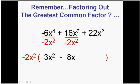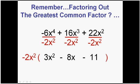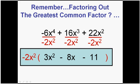Dividing the next term by negative 2x squared we get negative 8x. And then finally do the same thing to all three, dividing by negative 2x squared, we get minus 11. And we've taken out the greatest common factor. And that's the idea.